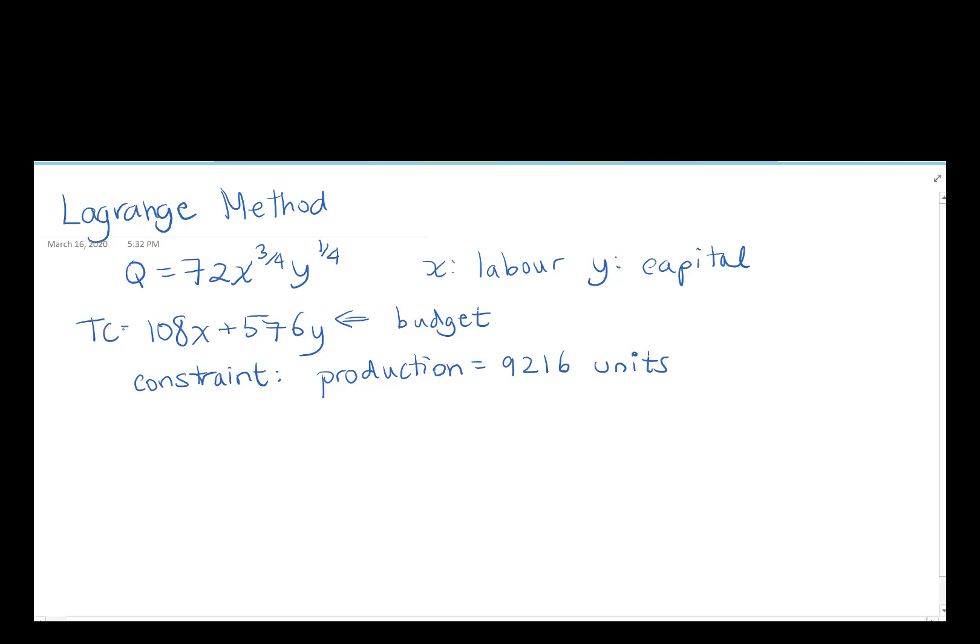In this case, what we're going to look to do, we actually want to take our total cost, which is our budget, and we want to minimize it. So we're going to minimize our total cost subject to requiring our production of 9,216 units. Our production function is a Cobb-Douglas, and in this case, it's going to show up as our constraint.